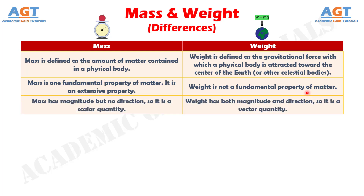Number 3: Mass has magnitude but no direction, so it is a scalar quantity, whereas weight has both magnitude and direction, so it is a vector quantity.